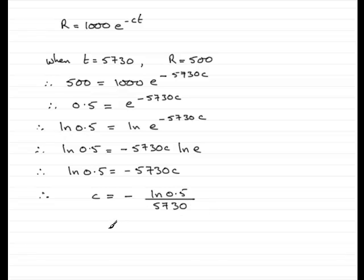Get on your calculator, work that out. And what you should find you get is 0.000012096, and so on. Now, we're asked to give C to three significant figures, so that means that therefore C equals 0.0000121.